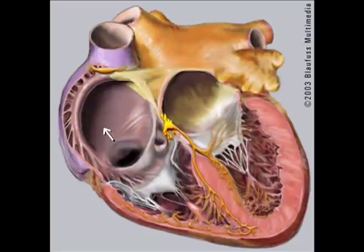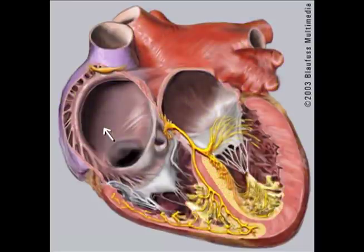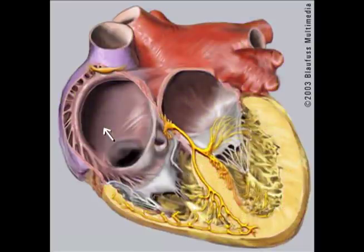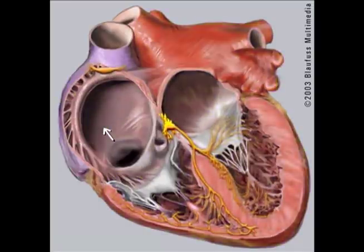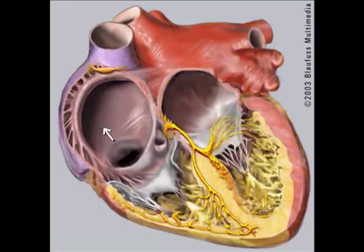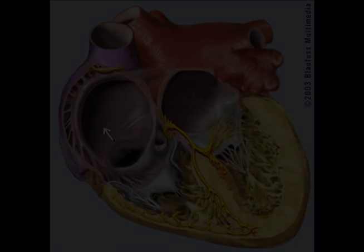As you can see, the heart rate is now dependent on how fast this area generates the impulse, as opposed to what the sinus node dictates.